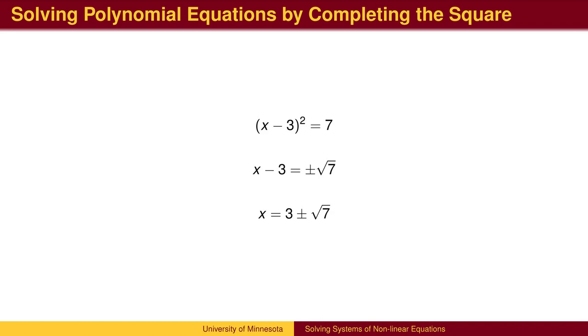A second method makes use of completing the square. When one side is a perfect square, we can take the square root of both sides. Recall that we will get two answers, plus and minus.